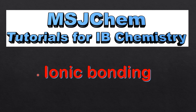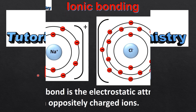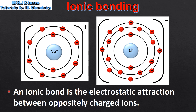This is MSJChem. In this video I'll be looking at ionic bonding. We'll start with the definition of ionic bonding. An ionic bond is the electrostatic attraction between oppositely charged ions. Ionic bonding occurs between a metal and a non-metal with a difference in electronegativity of greater than 1.7 units.